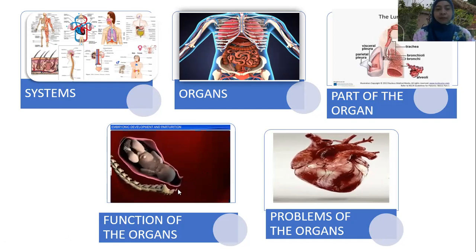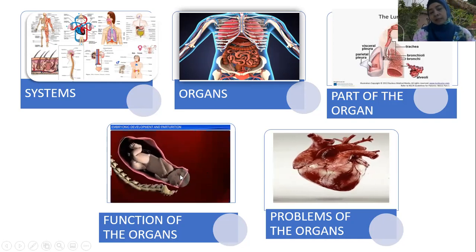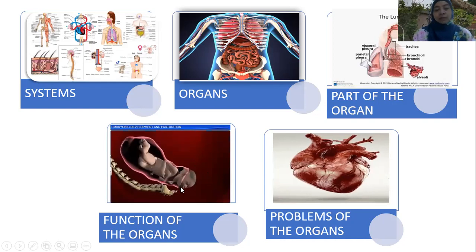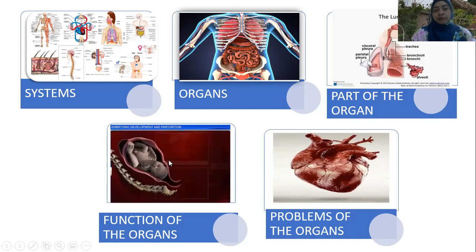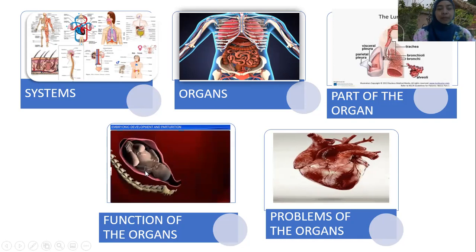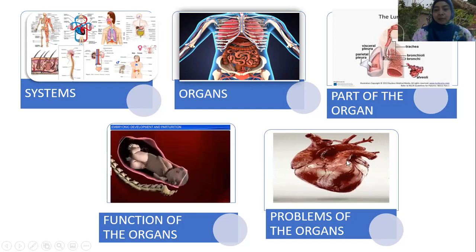There are many functions of organs. In this picture we can see how the uterus functions — during labor, uterine contractions will push the fetus to come out and be born.